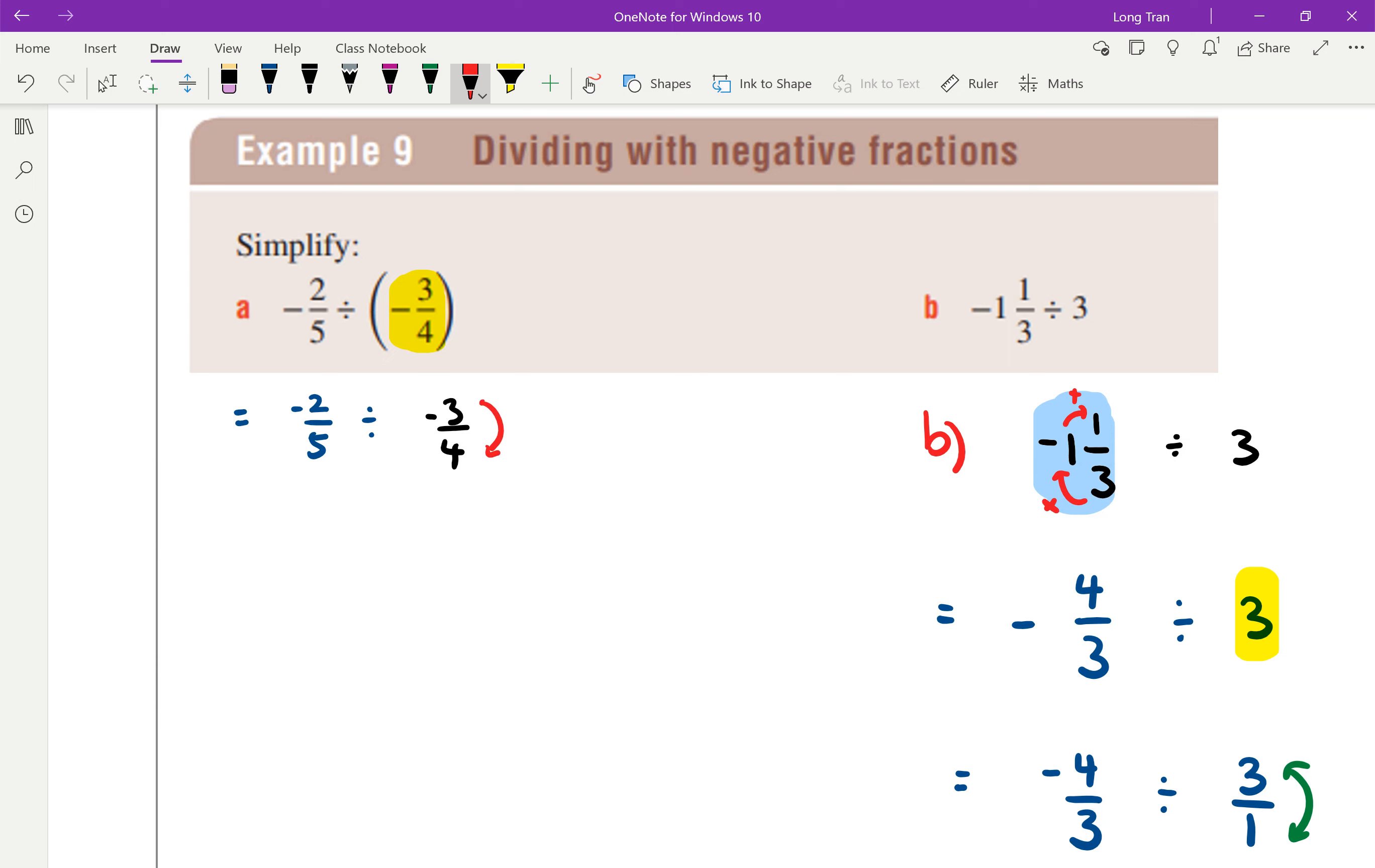So when I do the reciprocal there, I normally like to keep the negative with the numerator. So when I flip it, it is okay to write it like this, 4 over negative 3. If you're uncomfortable with that, you can keep the negative on the very outside, like over here, if you want.